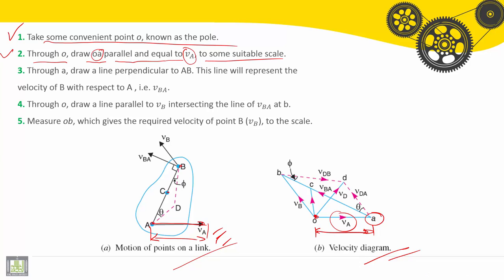Third step, through A, draw a line perpendicular to AB. Here we have A, we'll draw some line perpendicular to the line AB.